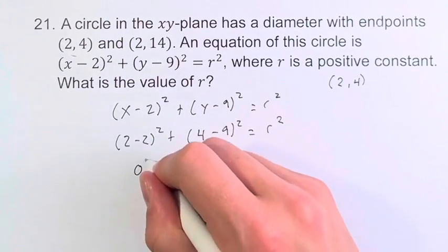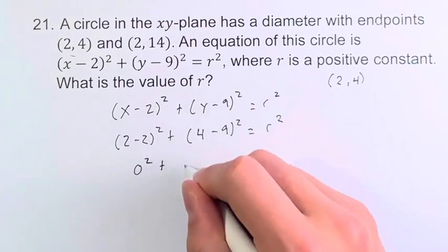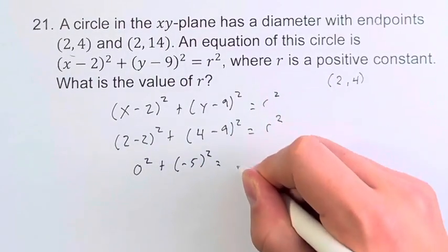2 minus 2 is 0, so this is 0² plus 4 minus 9 is negative 5 squared, which is equal to r².